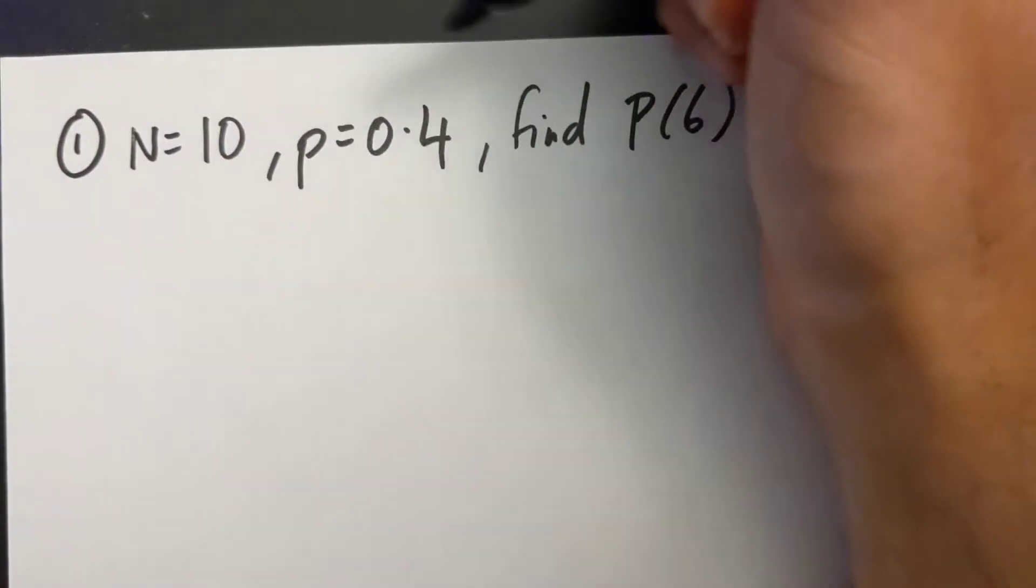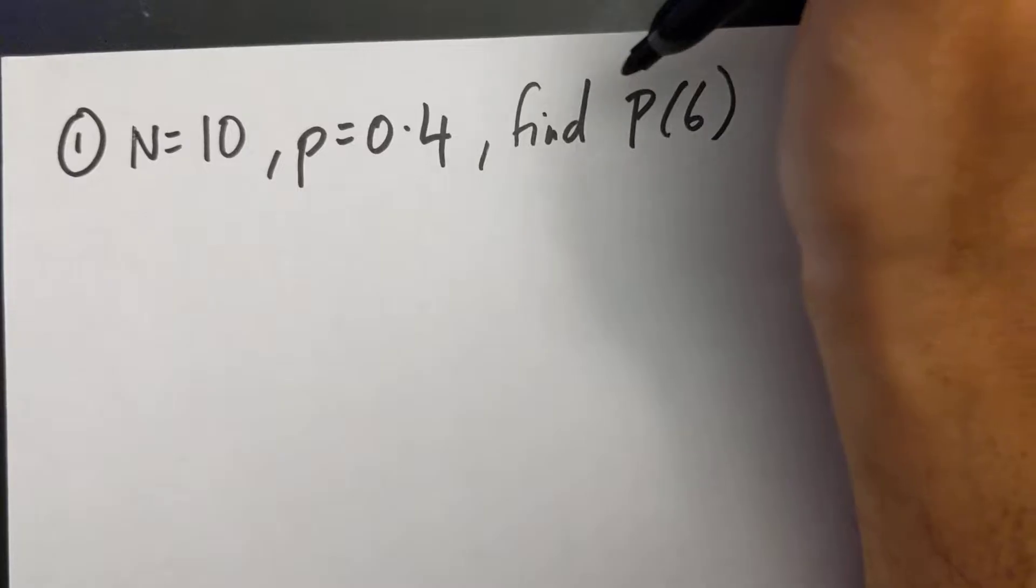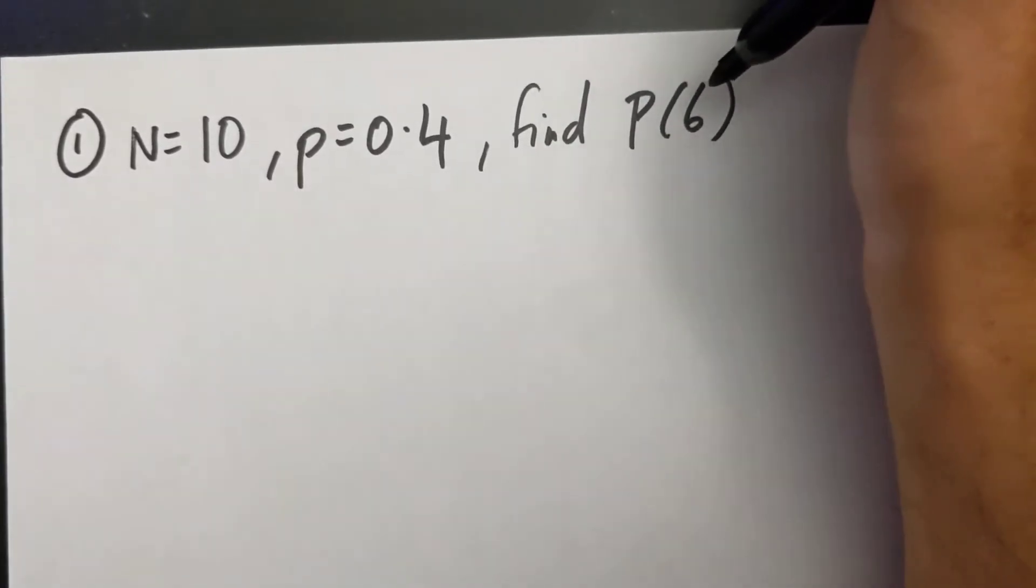Okay, so in this question, n is equal to 10, p is 0.4, and it asks you to find the probability of 6.